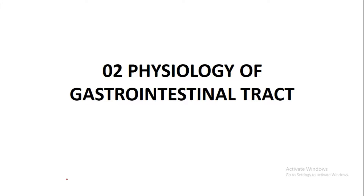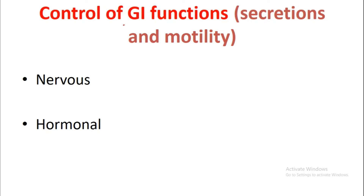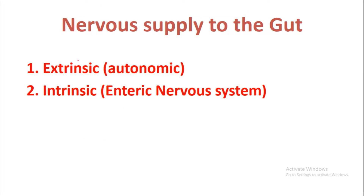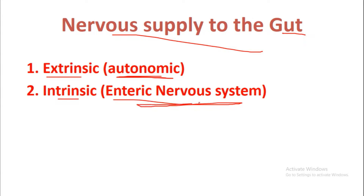Hello everyone. Today we begin with the physiology of the gastrointestinal tract, specifically the control of gastrointestinal functions, which includes secretions, motility, nervous control, and hormonal control. In this video we are going to see the enteric nervous system, which is the most important. First, we begin with the nervous supply to the gastrointestinal tract. There are two types: extrinsic supply via the autonomic nervous system, and intrinsic supply, also known as the enteric nervous system.